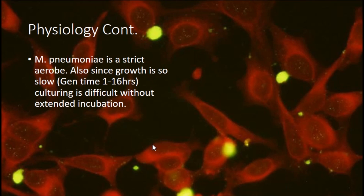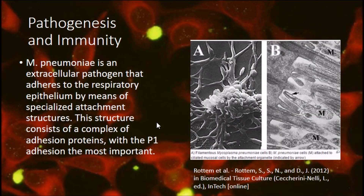Regarding pathogenesis and immunity, mycoplasma pneumoniae is an extracellular pathogen that adheres to the respiratory epithelium by means of specialized attachment structures. The structure consists of a complex of adhesion proteins, with the P1 adhesin being the most important, facilitating attachment to ciliated mucosal cells.